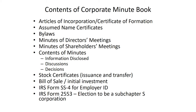Meetings in the future may be very short, but there should be some record that those meetings actually occurred, even if the meeting occurs with only one person. The minutes should identify what information was disclosed, what the discussion was, and what the decisions were. The corporate minute book should also include a record of stock certificates — which ones have been issued, who they've been issued to, and if they've been transferred, who they've been transferred to. If shareholders are providing something other than cash for their initial investment, there should be a bill of sale showing that property was transferred to the corporation.